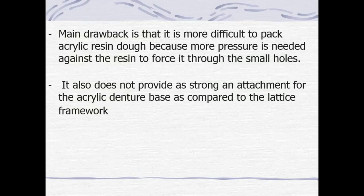Mesh construction may also interfere with the arrangement of prosthetic teeth and does not provide as strong an attachment for the acrylic resin denture base as the latticework construction. Mesh construction may be used whenever multiple teeth are to be replaced. Relief is provided beneath the minor connectors for both open lattice and mesh construction. This relief provides space between the minor connector and the underlying master cast or residual ridge, permitting the acrylic resin to encircle the minor connector and providing a mechanism for attachment of the denture base to the framework.